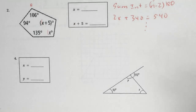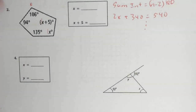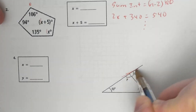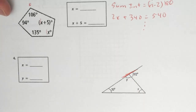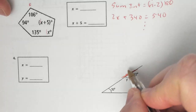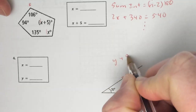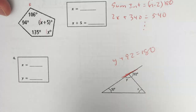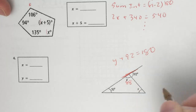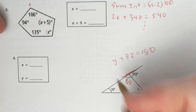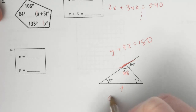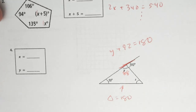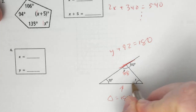Number 4 — I love these problems. We know a straight line adds up to 180 degrees. So y plus 92 equals 180 degrees. Subtracting 92, we get y equals 88. Make sure you put it in the picture. We also know all three angles of a triangle add up to 180 degrees. So 180 minus 88 minus 50 gives you x.